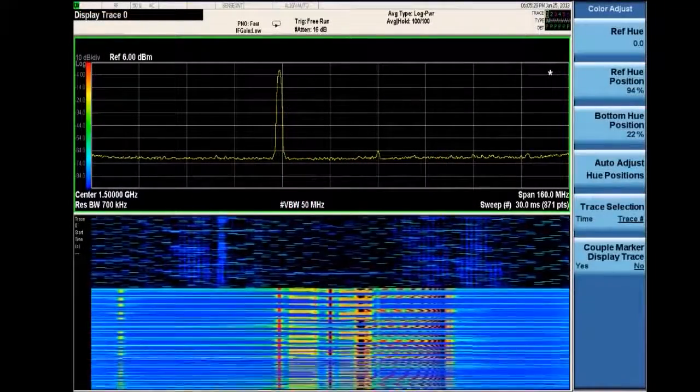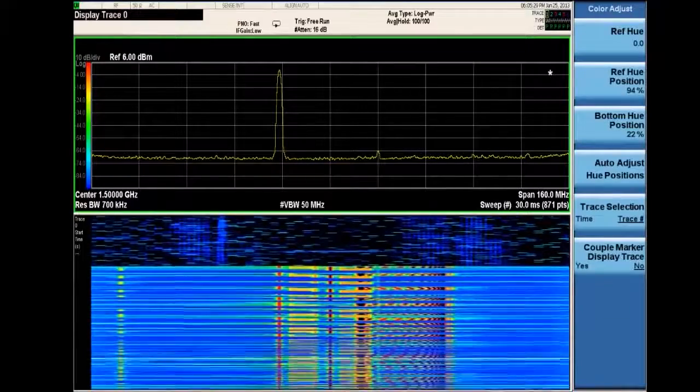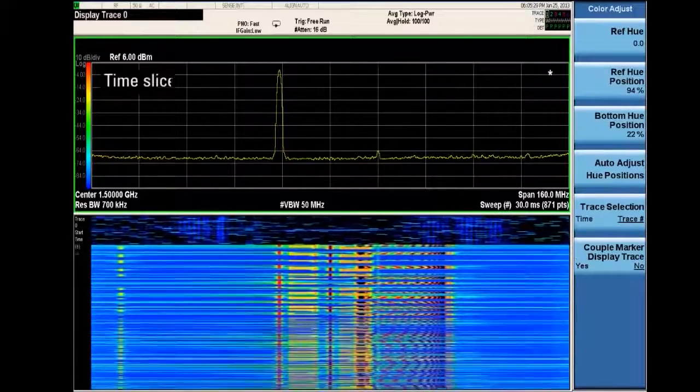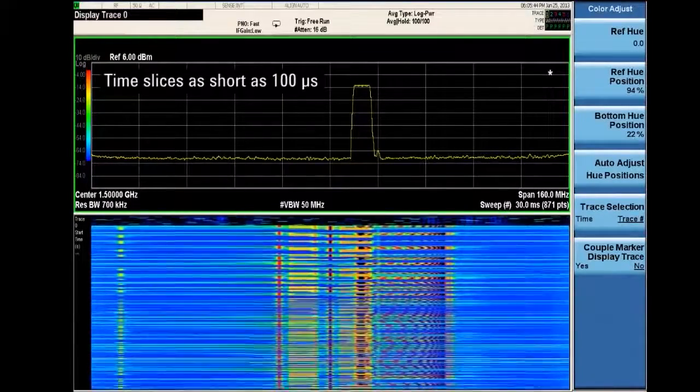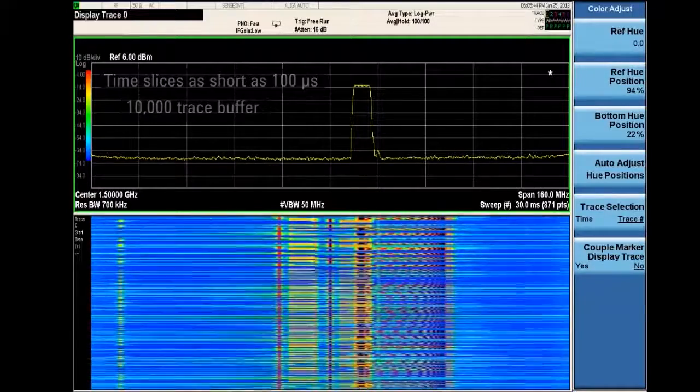Where time relationships are important, the spectrogram display adds a time axis, time slices as short as 100 microseconds, and a scrollable buffer holding up to 10,000 traces.